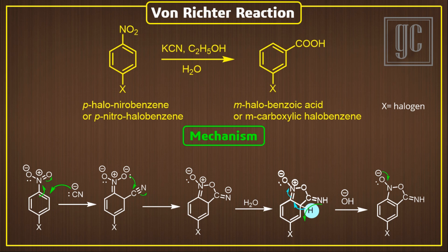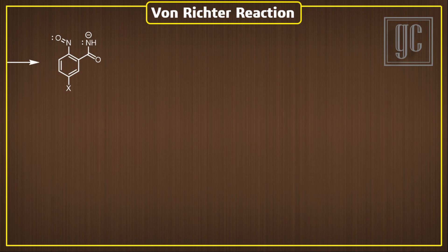Now the negative charge on the oxygen moves down, and due to this the weak bond — that is the nitrogen-oxygen bond — breaks, and amide formation takes place. Now the negative charge on nitrogen attacks on the nitroso group, and again a cyclic five-membered ring intermediate is formed.